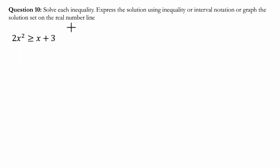Okay, so we have a quadratic inequality here, so I'm going to solve it and then show it in several ways. The first thing I want to do is get zero on one side, so I'm going to subtract x and 3, and then I get this.